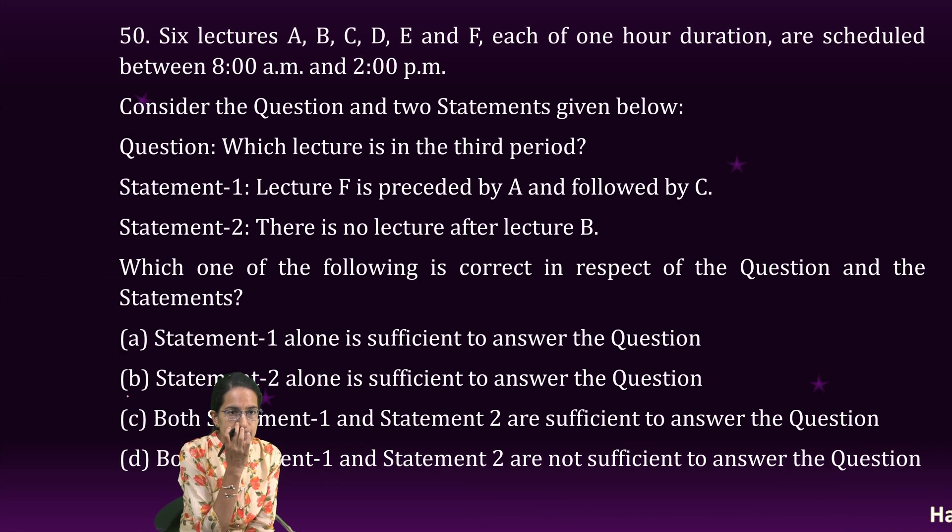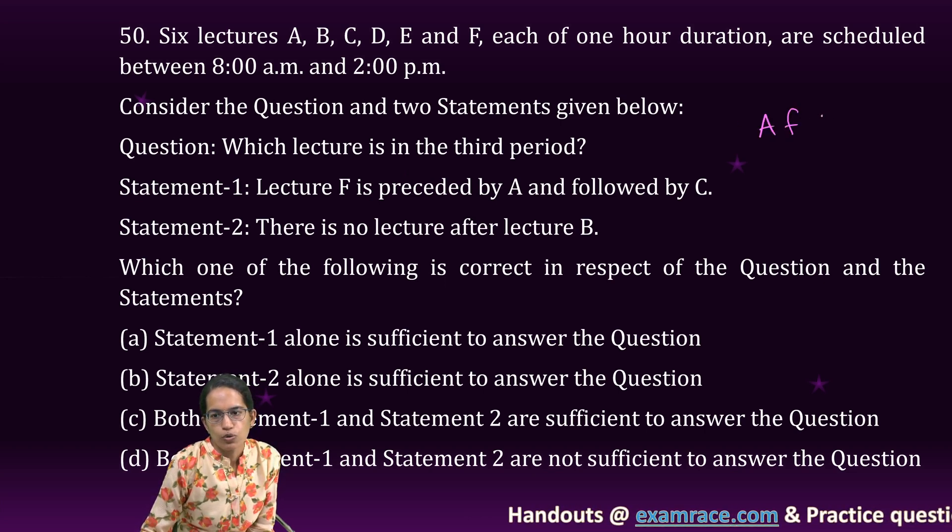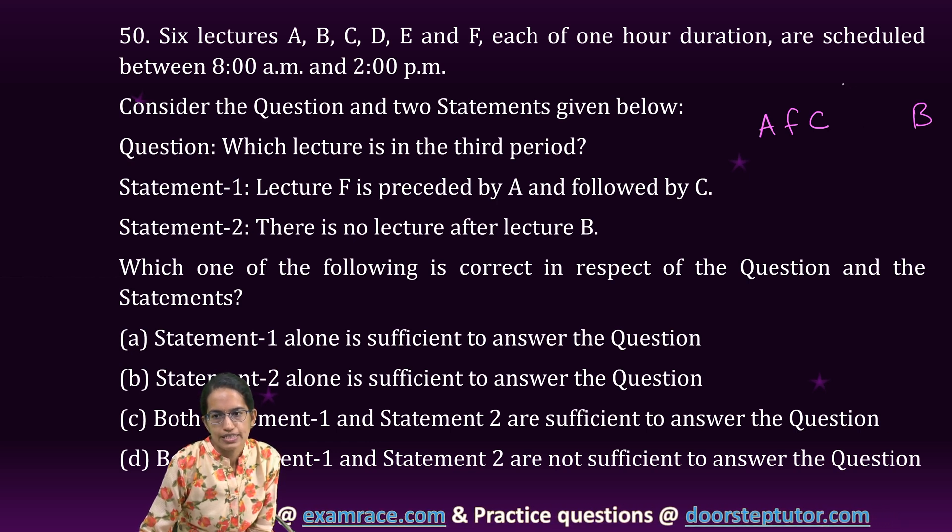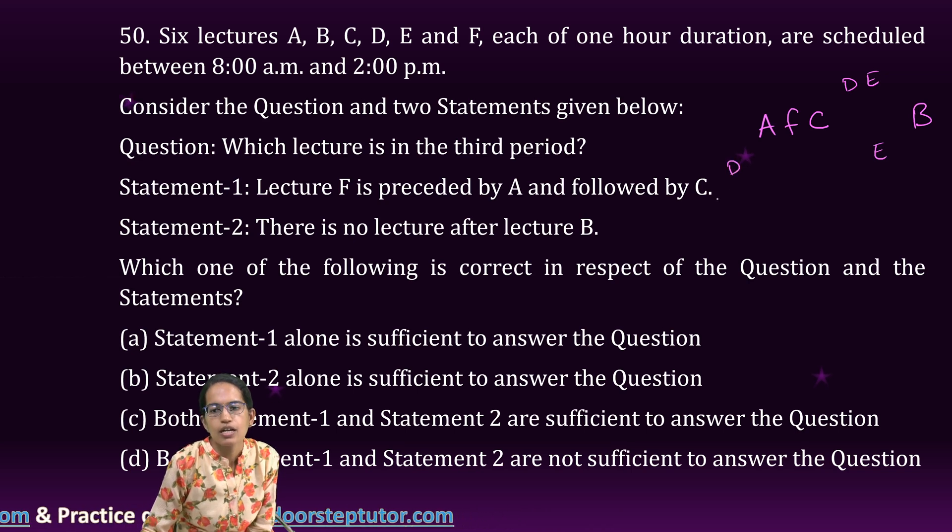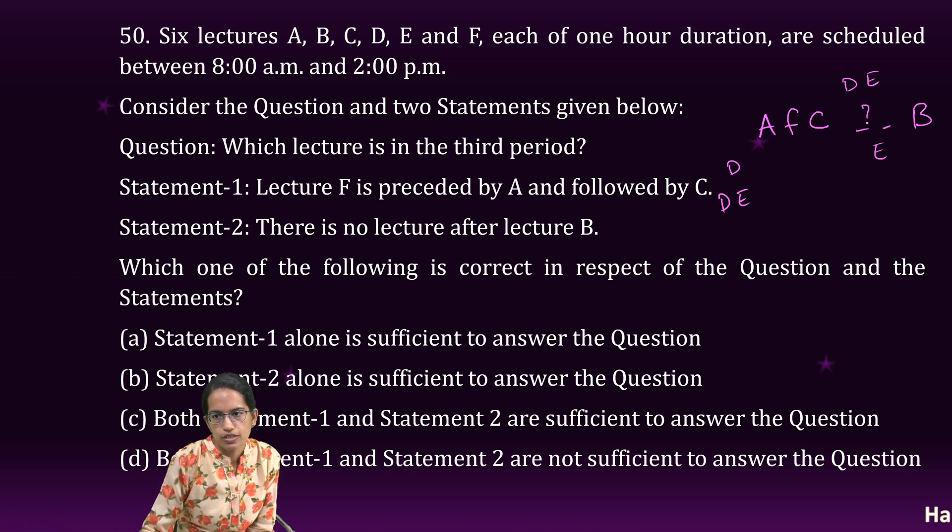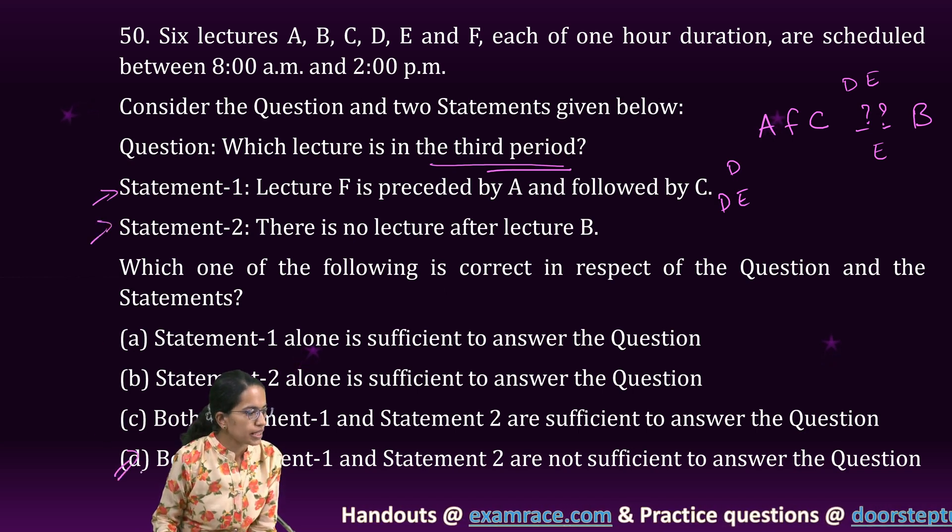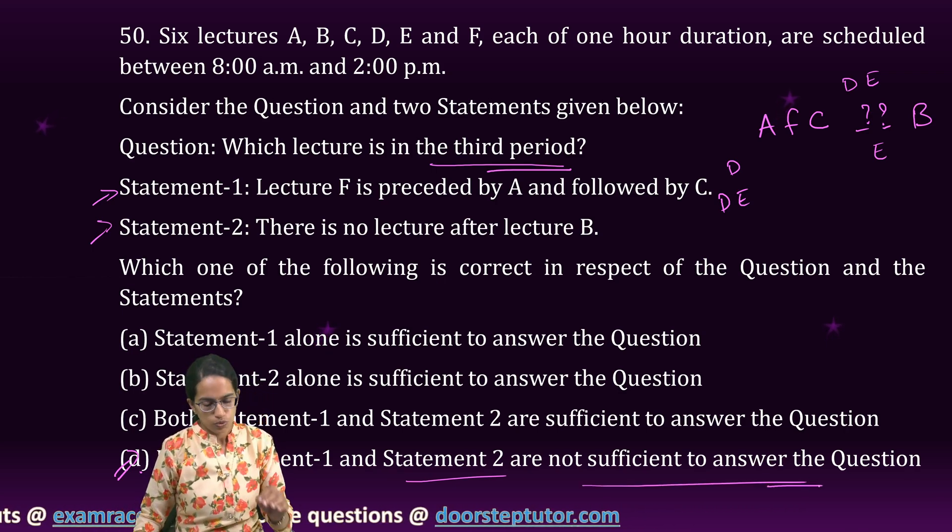The next question is there are six lectures. Now F is preceded by A followed by C. B is the last lecture. So which lectures remain D, E. So D, E can be here in any combination. It could be E and D here or D and E on the very beginning. I don't know. So since I don't know the arrangement of D and E, which are the two missing lectures here, I cannot say which lecture is third even with both the statements getting there. So D would be the right answer. That is both the statements together are not sufficient to answer this question.